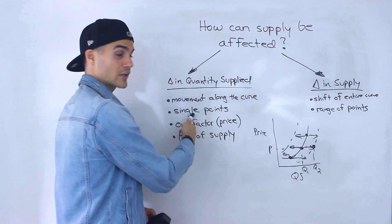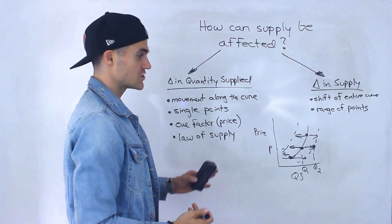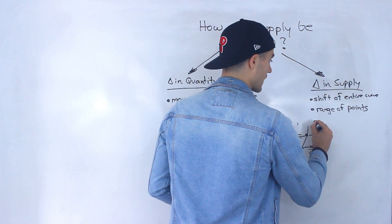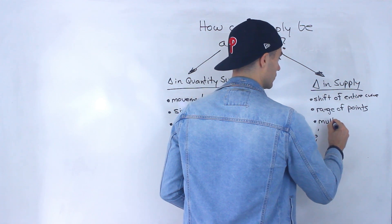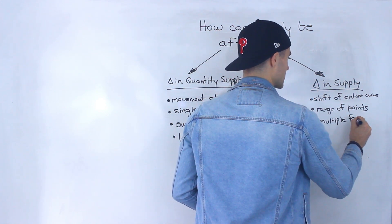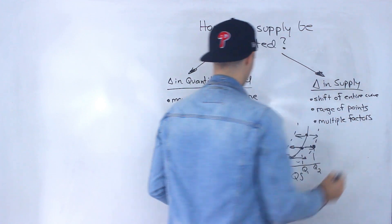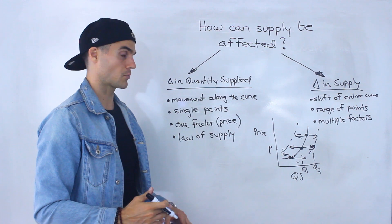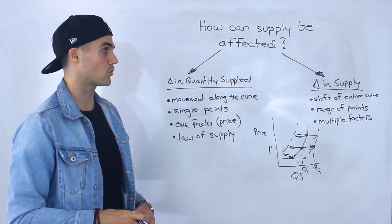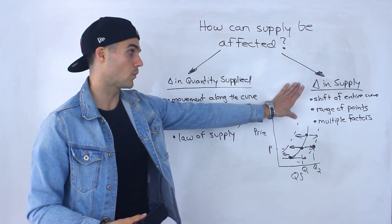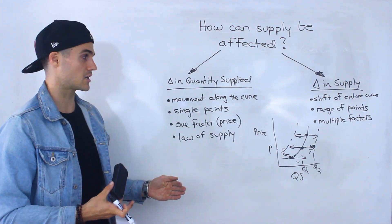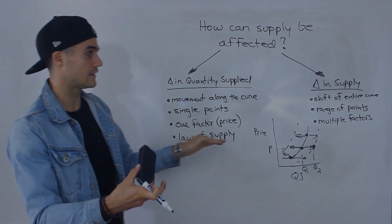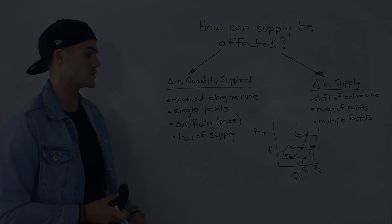We're looking at changes across the range of all points on the curve. A change in supply — a shifting of the entire curve right or left — is going to be affected by multiple factors, not just price. There's going to be a bunch of them, and we'll get into more detail when we cover change in supply. Next video is change in quantity supplied in more detail, and then the video after that will cover change in supply.